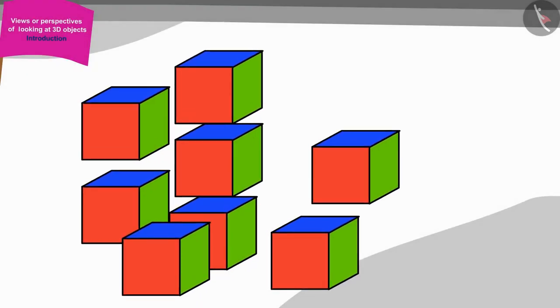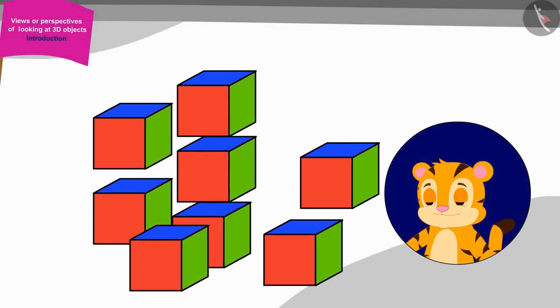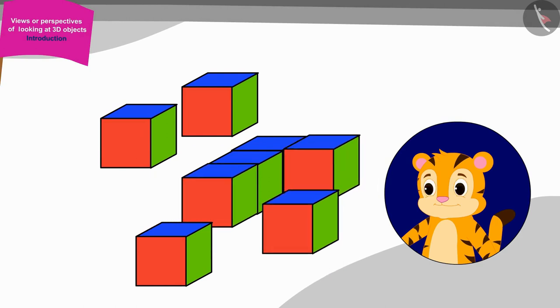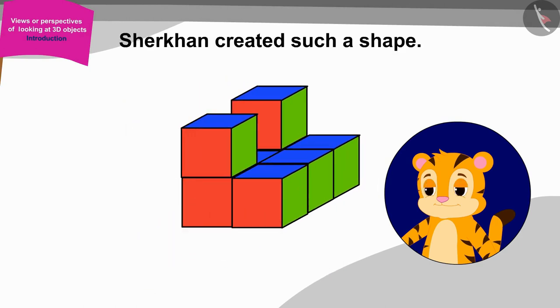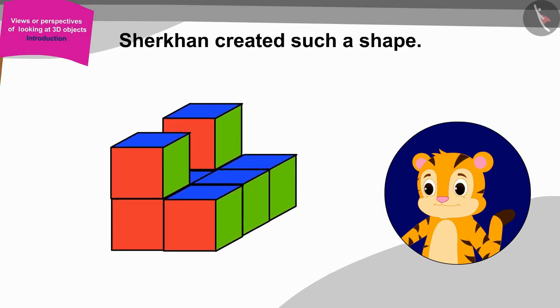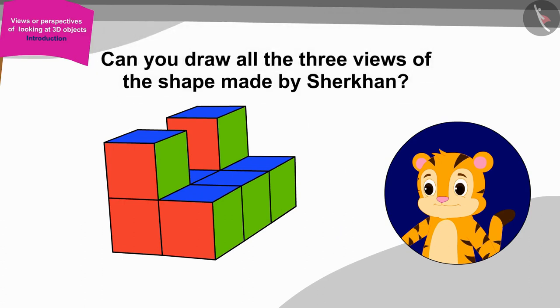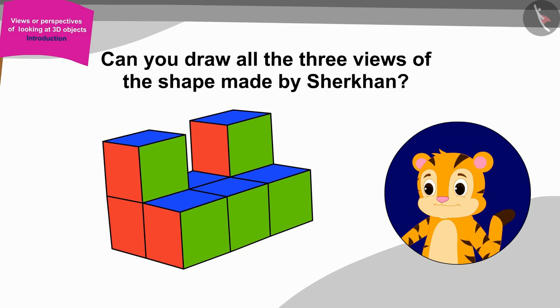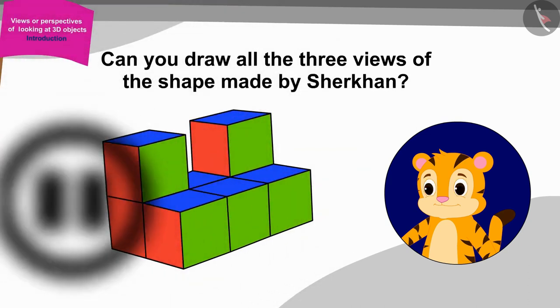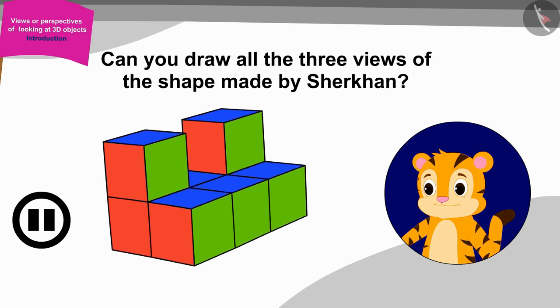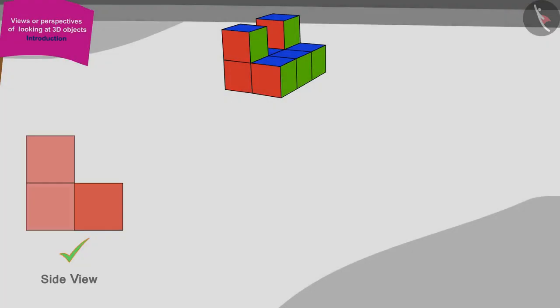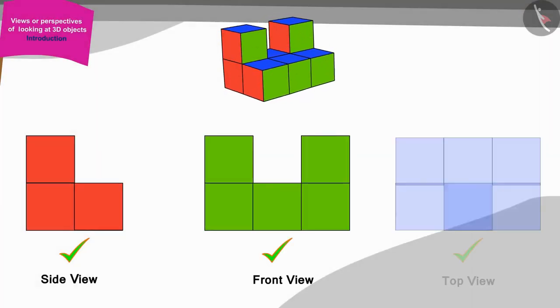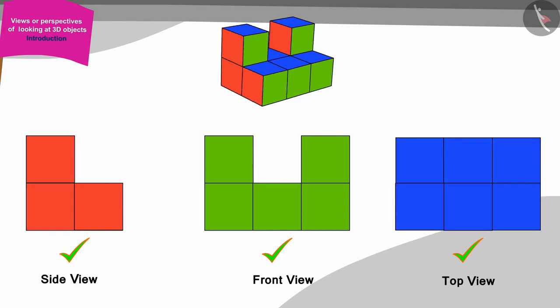Now, it was Shere Khan's turn to make shapes from the boxes. Shere Khan created such a shape. Can you draw all three views of the shape made by Shere Khan? If you want, you can stop the video and find the answer. Well done children, you have made a perfect picture.